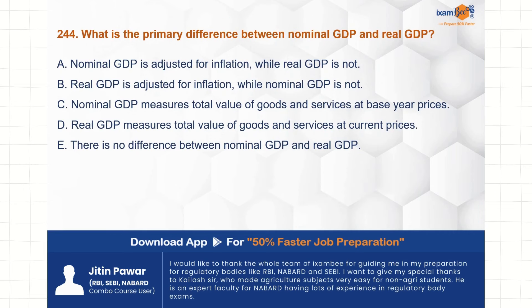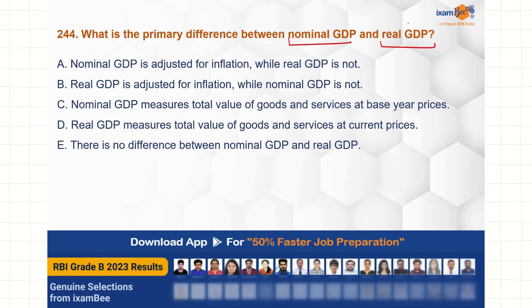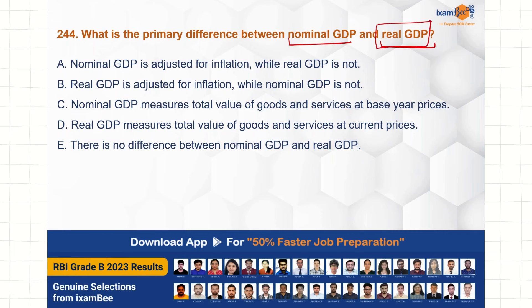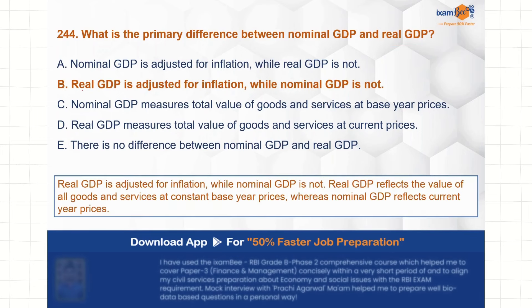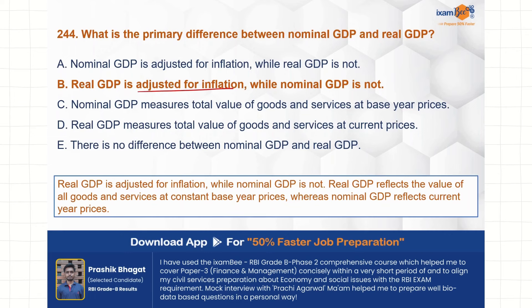Which is the primary difference between nominal GDP and real GDP? Jo aapki real GDP hoti hai, that is actually adjusted with inflation. Nominal GDP is not adjusted with inflation. So B is the correct choice here: real GDP is adjusted for inflation while nominal GDP is not. Real GDP reflects the value of all goods and services at a constant base year price, whereas nominal GDP reflects current year prices only.